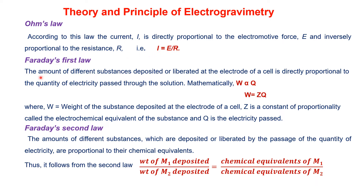Faraday's first law states that the amount of different substances deposited or liberated at the electrode of a cell is directly proportional to the quantity of electricity passed through the solution. Mathematically, the weight of sample deposited is proportional to the quantity of electricity or charge passed. Replacing the sign of proportionality with a constant: W = ZQ, where W is the weight of the substance deposited, Z is the electrochemical equivalence, and Q is the electricity passed.